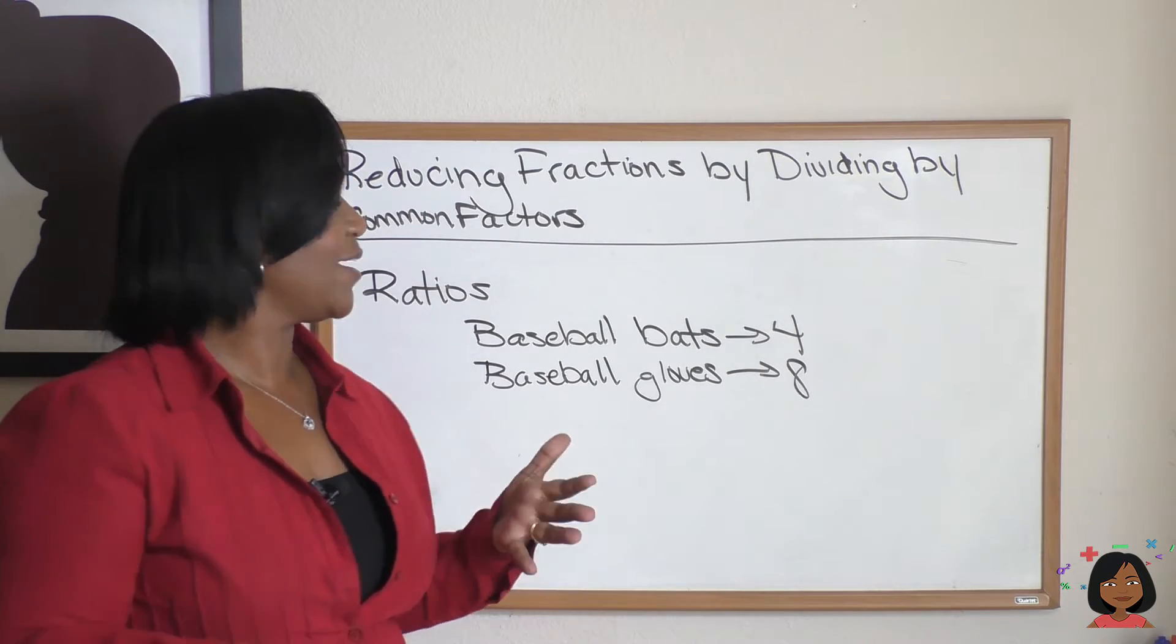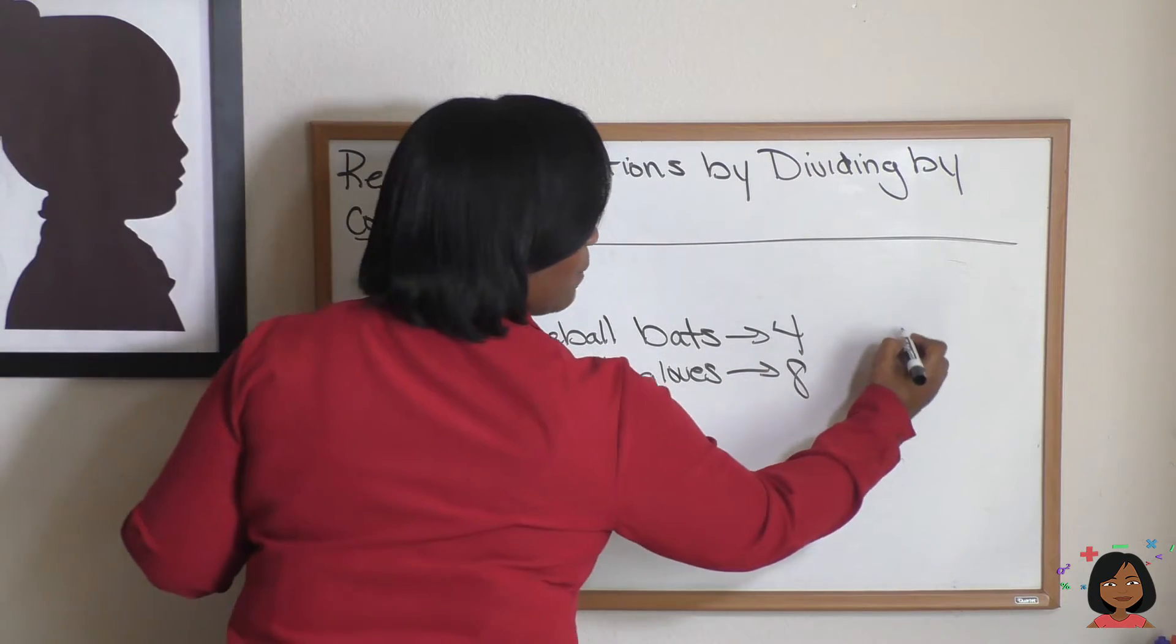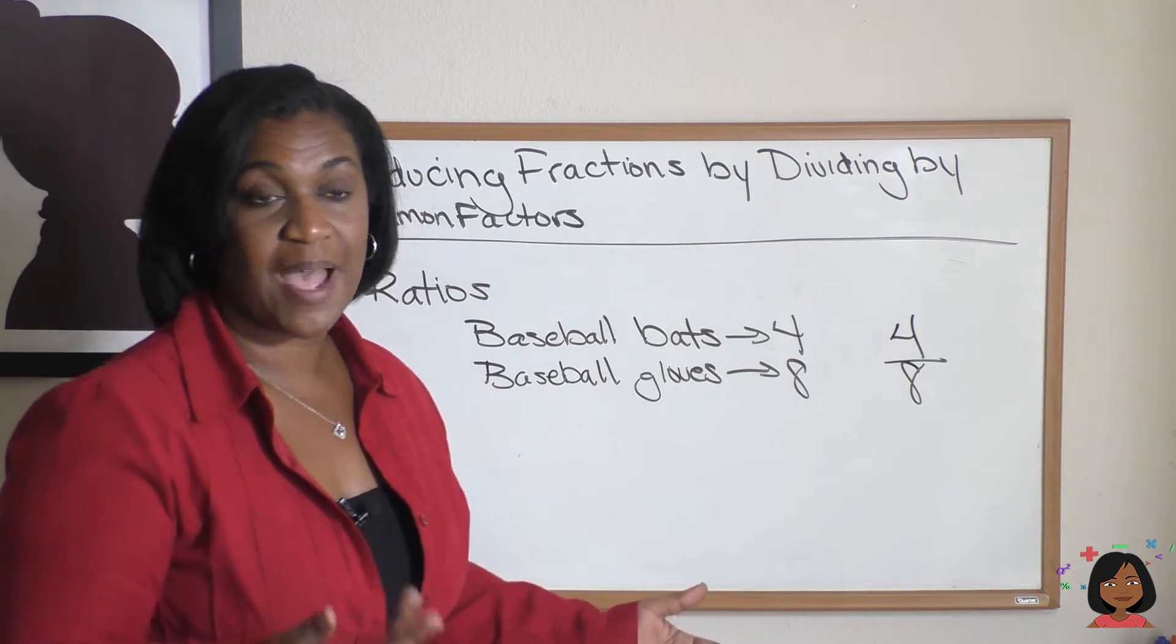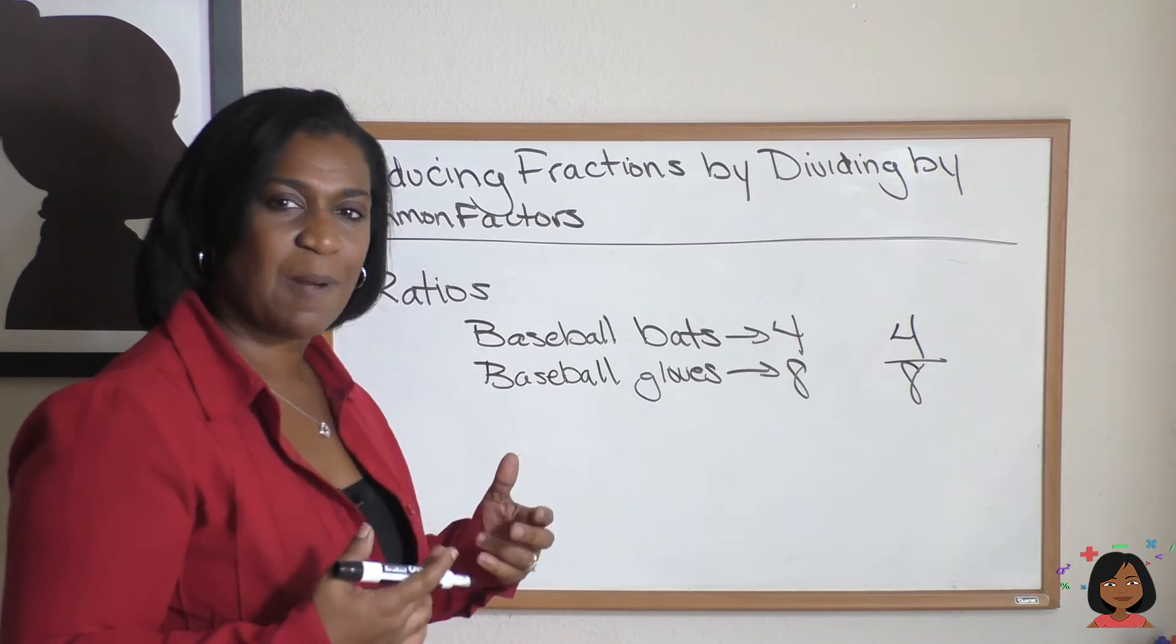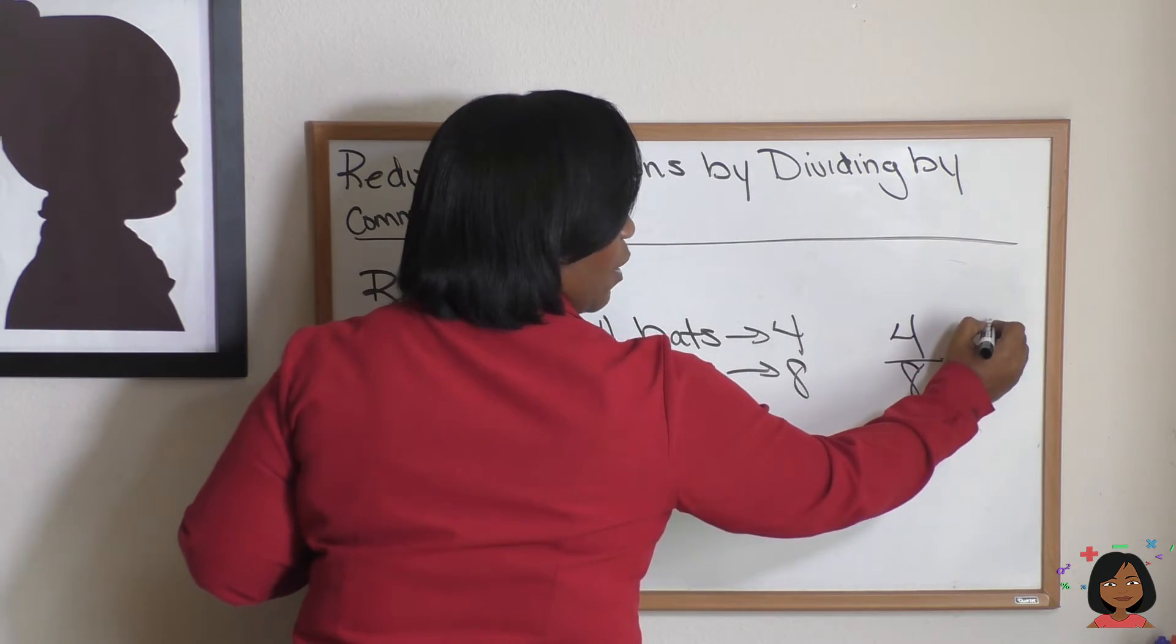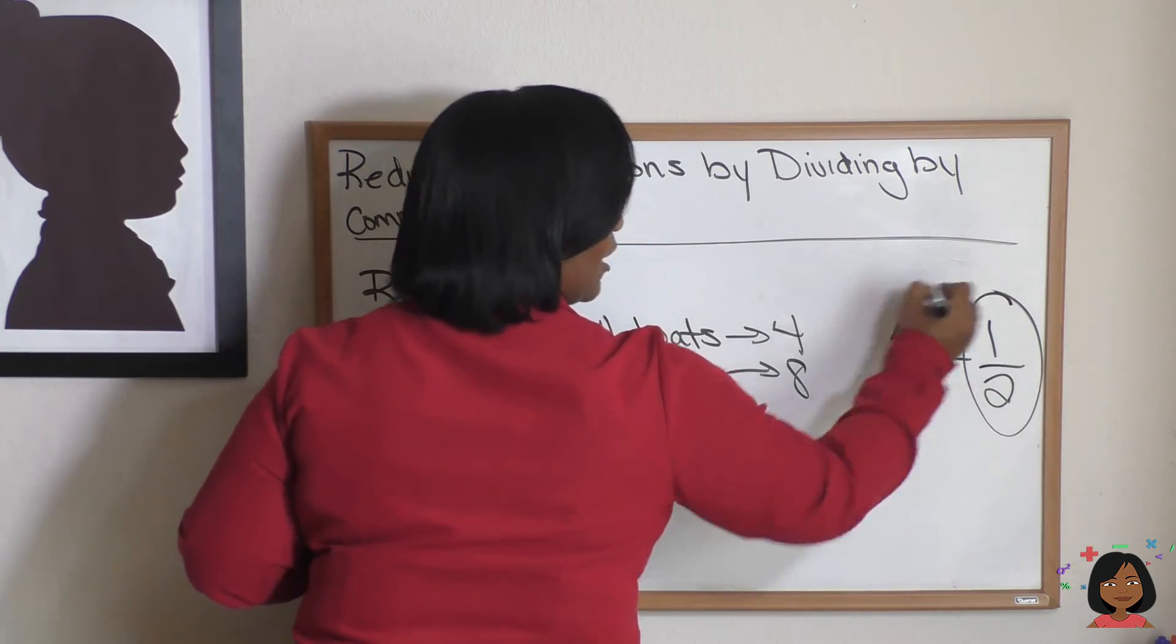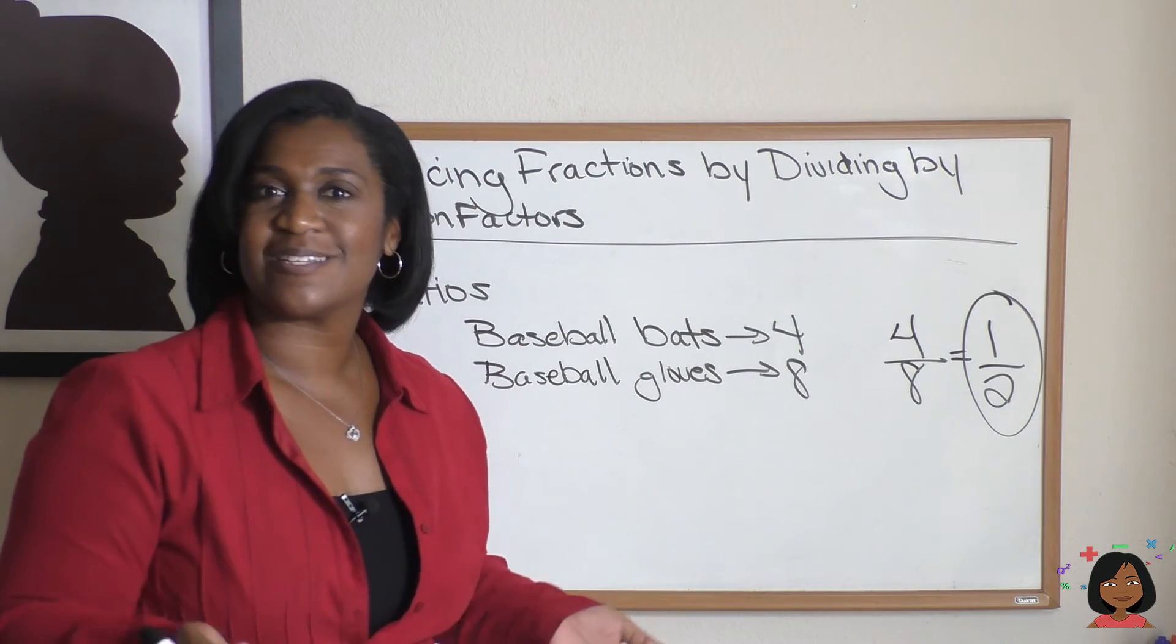So if I asked you what was the ratio of bats to gloves, we know we put the bats on top, 4, and on the bottom for the gloves, we put 8. But look at that. We can reduce this by dividing by a common factor. What's that common factor? The number 4. So let's divide the top by 4. We get 1 and divide the bottom by 4. 8 divided by 4 is 2. So there you go. The ratio of bats to gloves is 1/2 or 1 to 2.